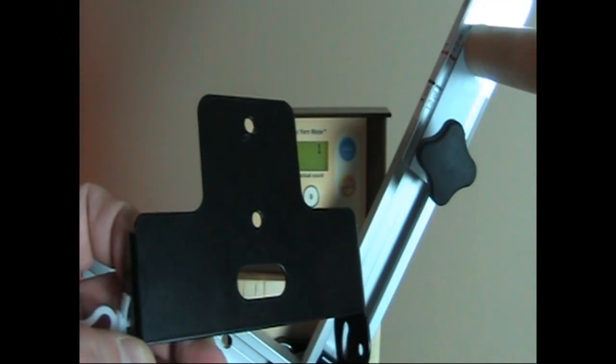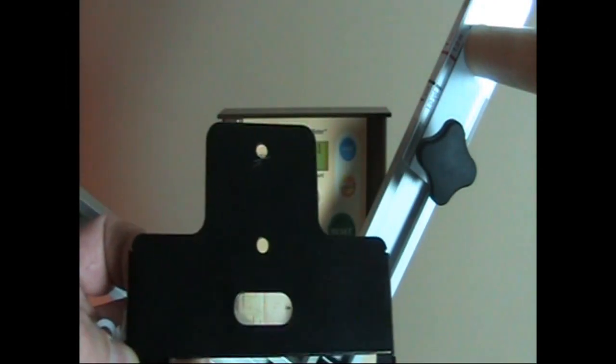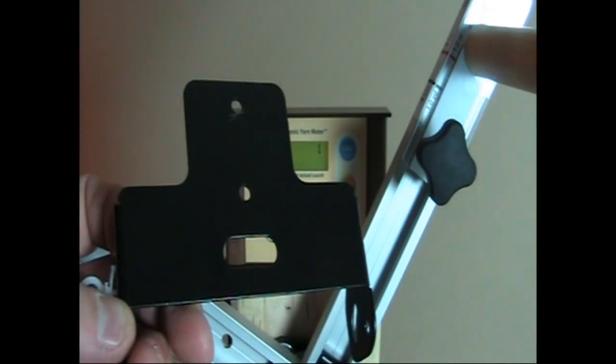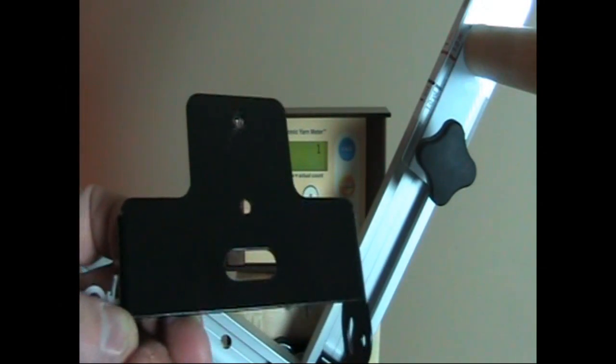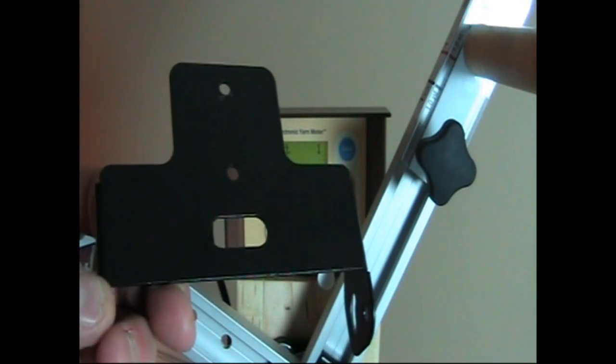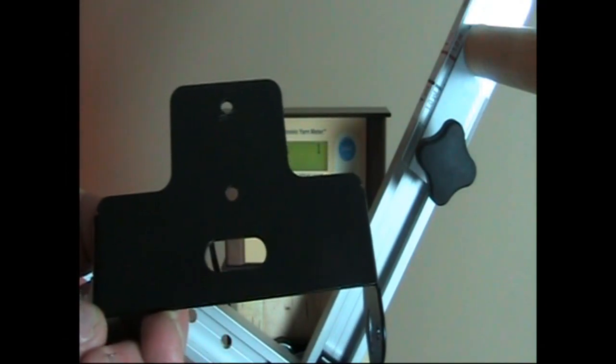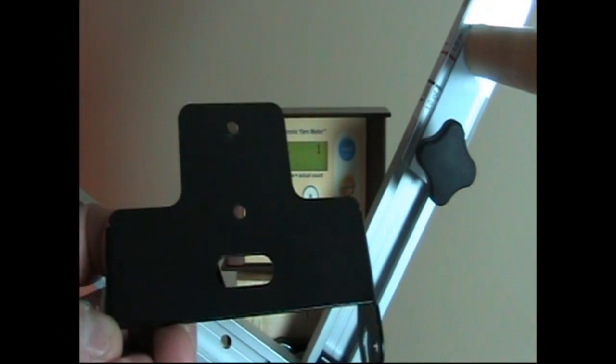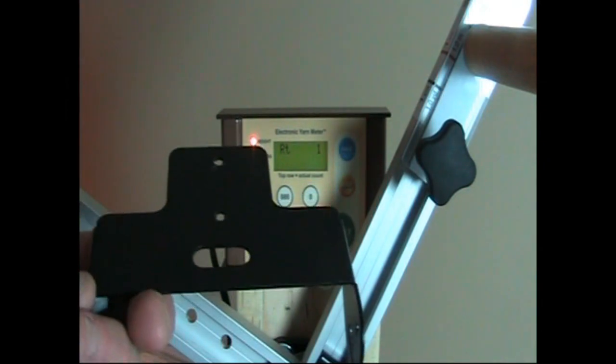The electronic rotation counter will come mounted on this metal bracket that sits on the top of the unit. It's actually the same bracket that's used for the small counter that is bundled with the skein winder in the first place. But since this is an upgrade, you simply remove the small counter, which attaches to the same bracket, and you attach the electronic rotation counter. So it's a pretty well thought out system where we're using the same metal bracket.